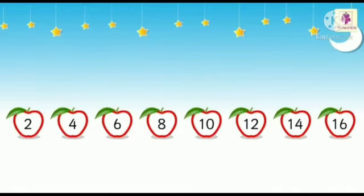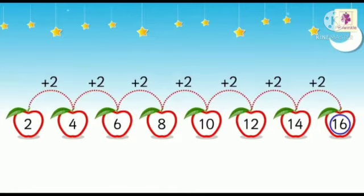See the picture — in the apples, some numbers are given. First is 2, then 4, 6, 8, 10, 12, 14, 16. How did we get this? This is a correct order — by adding 2 after every number, we got the correct order.